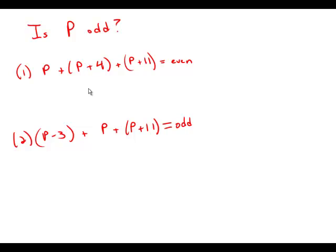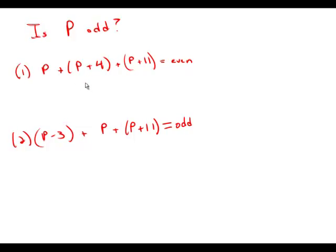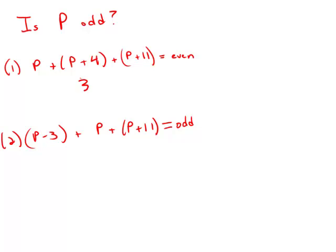Statement number one tells us that the sum of p plus p plus 4 plus p plus 11 is even. So let's see. What that means is we have 3p plus 15 equals an even number. Well, 15 is odd, and the only way that you get an even number is by adding odd plus odd. And so what that means is that 3p would have to be odd.